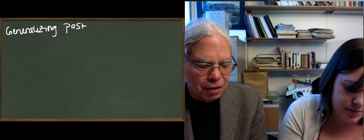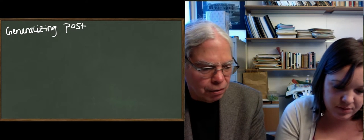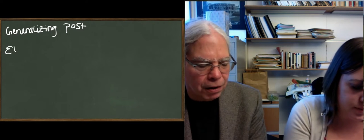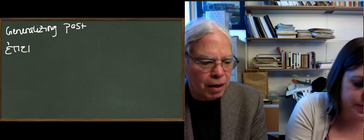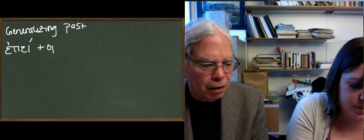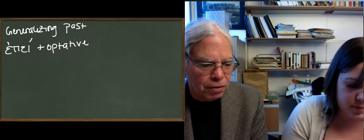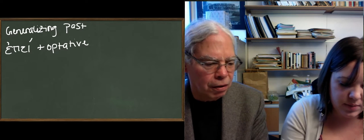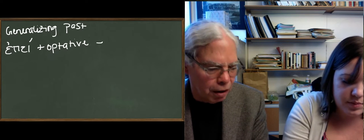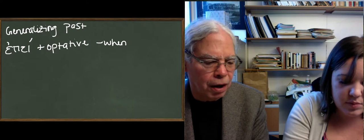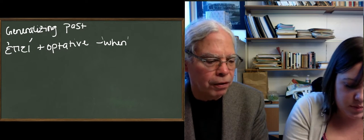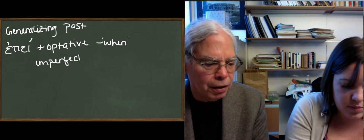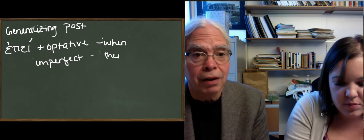Whenever we built houses, we used bricks. So we're going to use epe with the optative. Remember, this is the way past generals work: an plus the subjunctive and the present indicative for the present general; an plus the optative in the when clause — epe, or epeidei, or hotte plus the optative. And then the imperfect in the then clause. So: 'whenever we built houses, we used to use bricks,' effectively.